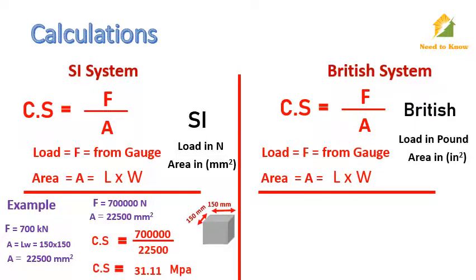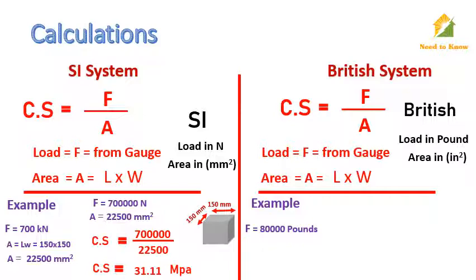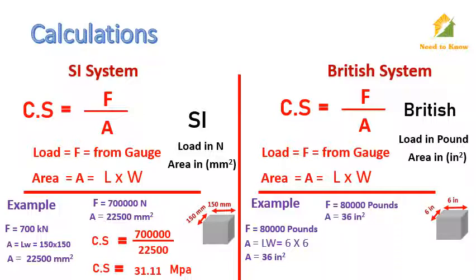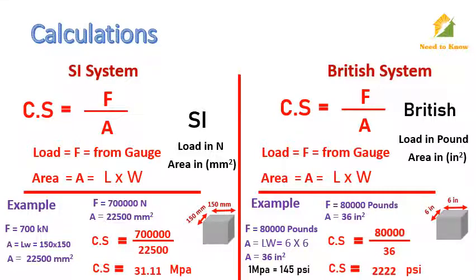In the case of the British system, consider load in pounds and area in inch square. For example, we apply load to a cubical sample and it failed at 80,000 pounds, so the load will be 80,000 pounds. The area can be calculated using this formula — length and width of the standard sample are 6 inches each. By substituting the values of length and width, we get the area in square inches. Now we have load and area, and from this we can calculate compressive strength in psi. To convert it to megapascal, divide it by 145, as 1 megapascal is equal to 145 psi.